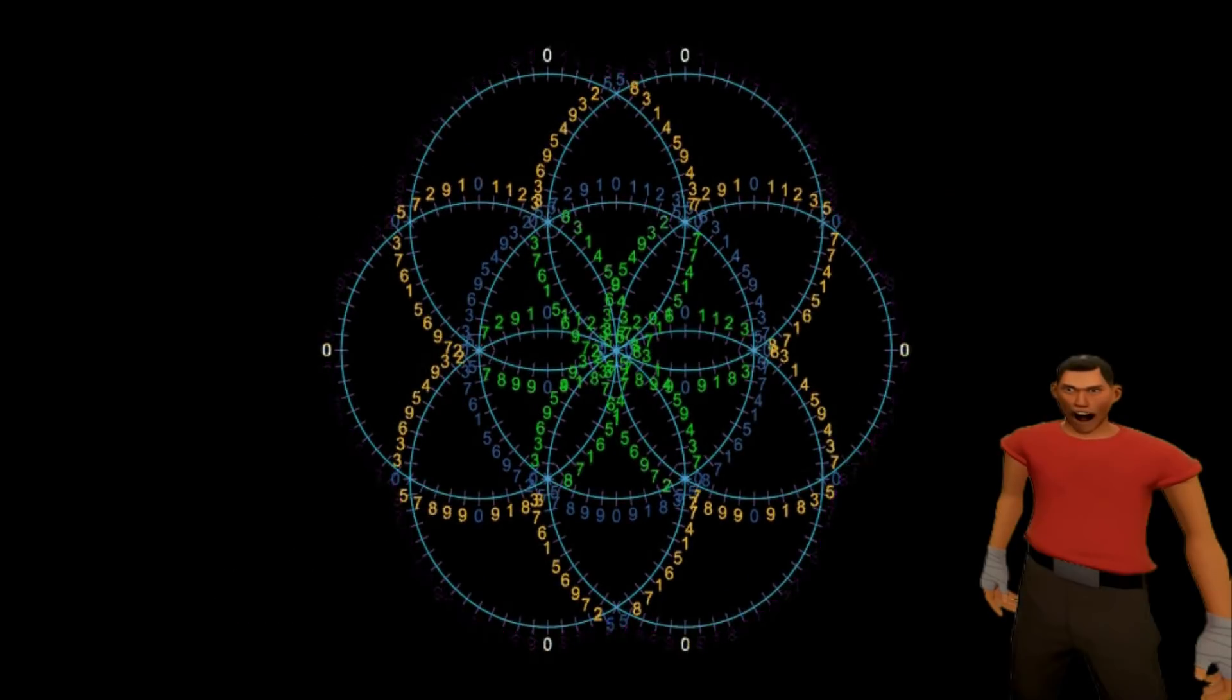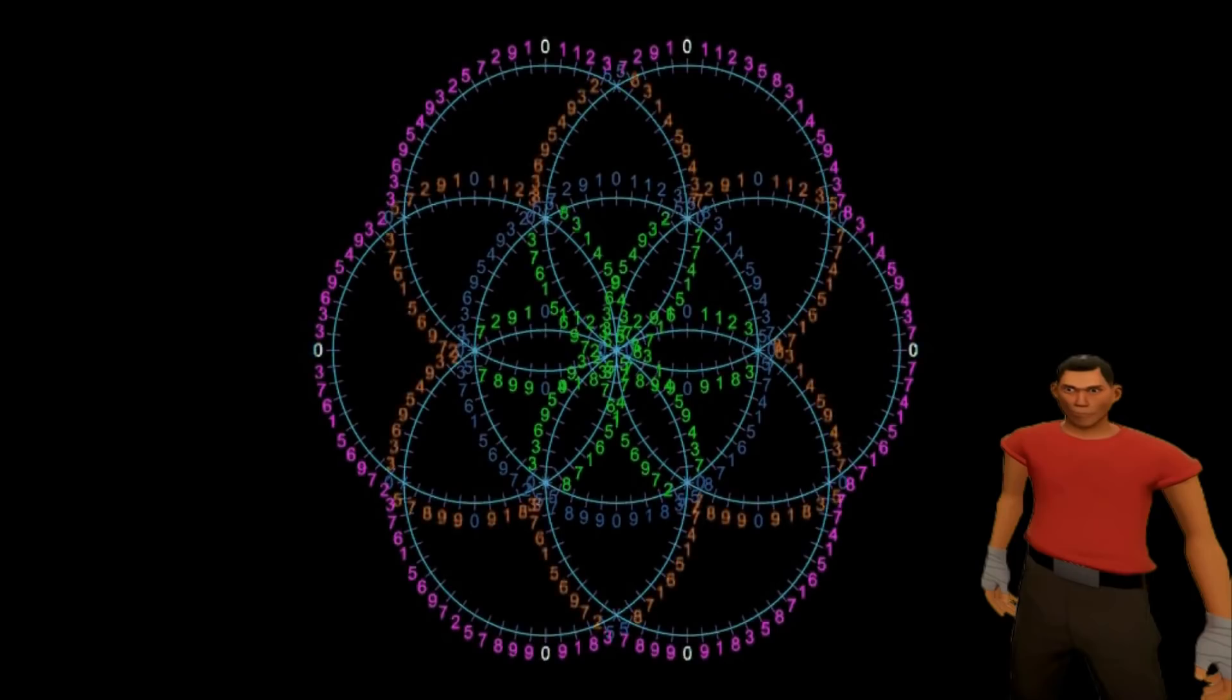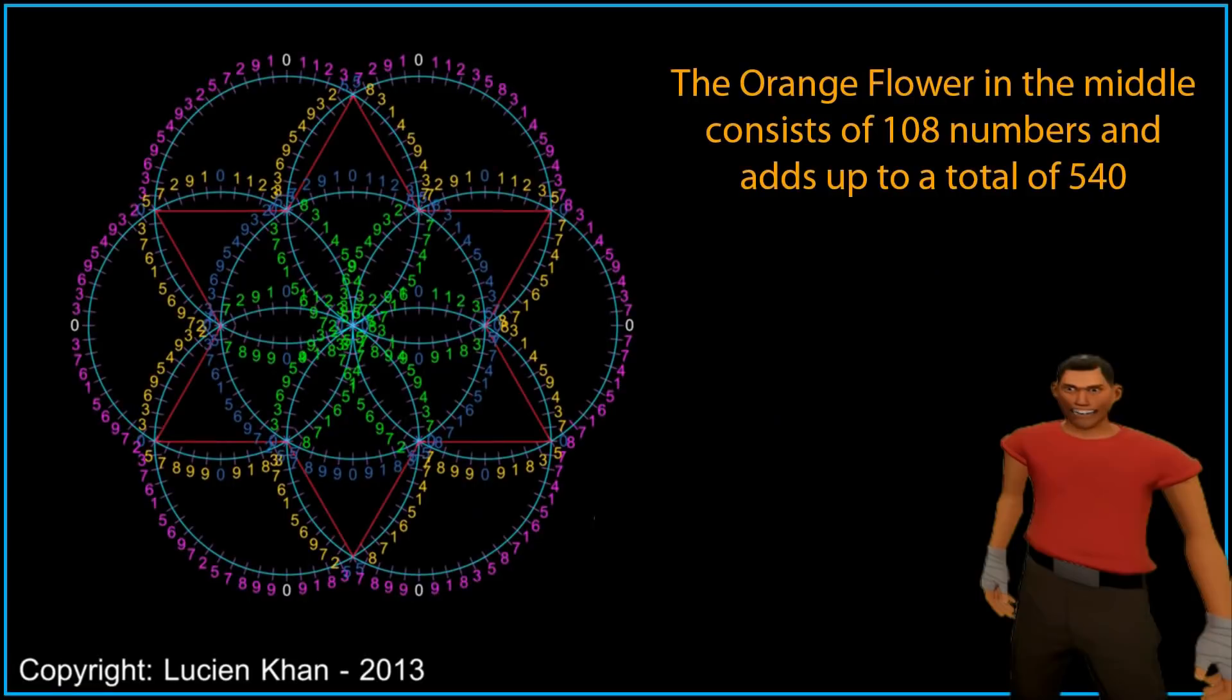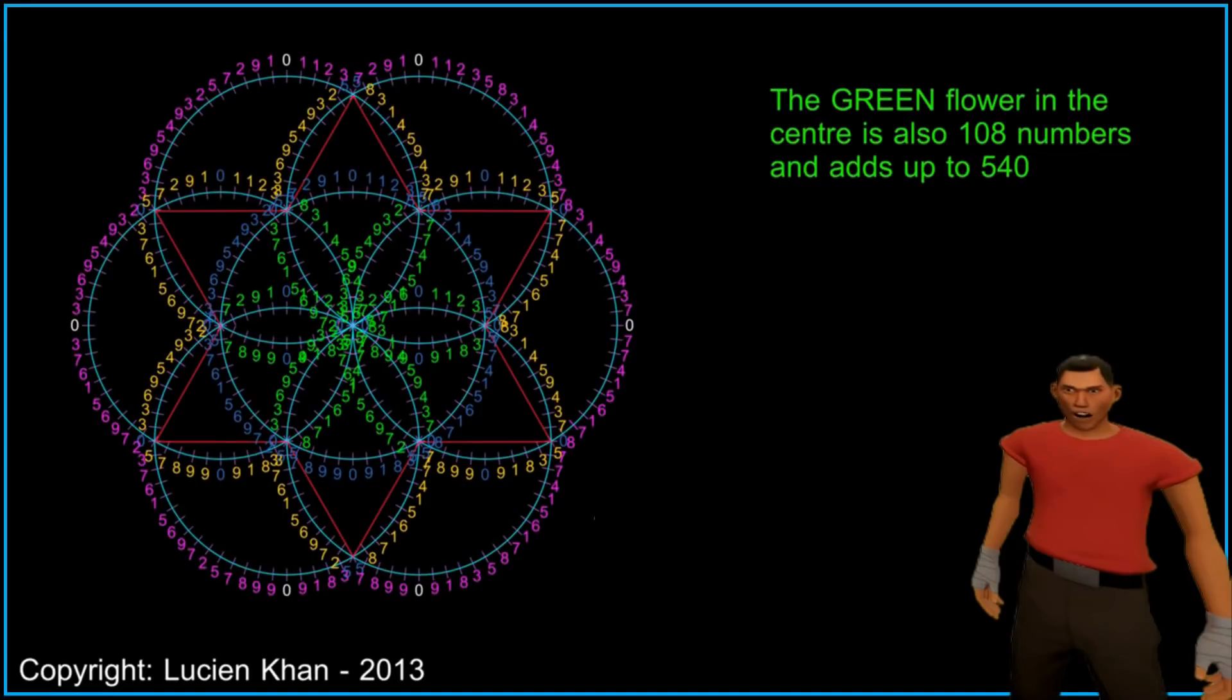The outer flower, shown in pink, consists of 108 numbers and adds up to a total of 540. The inner flower, shown in green, also consists of 108 numbers and adds up to 540.